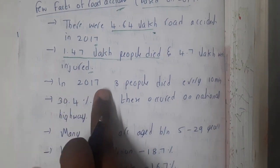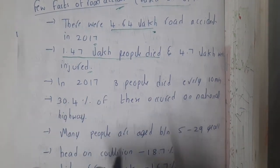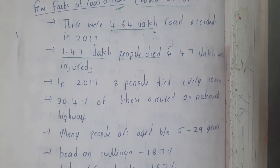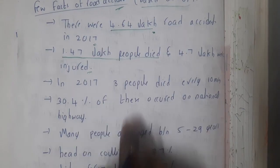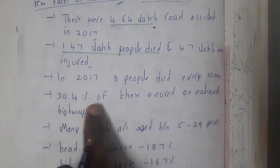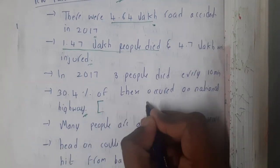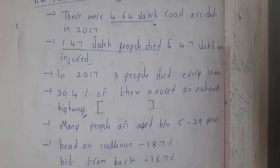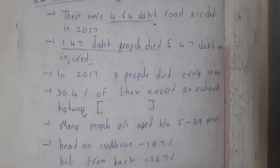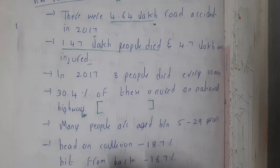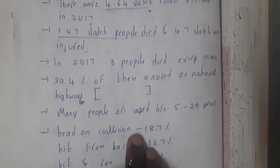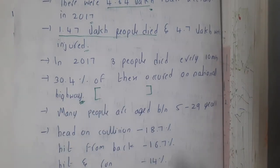In 2017, three people died every minute — roughly every 10 minutes, around three people died. Around 30.4 percent of accidents occurred on national highways. The major causes of accidents include carelessness of the driver, road conditions, weather, and environmental situations. Over-speeding on highways is a major reason.